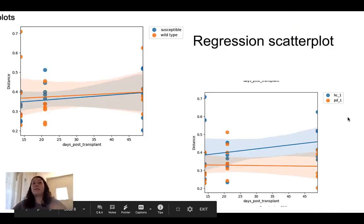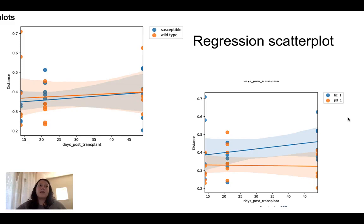Lastly, we looked at volatility plots and temporal analysis that showed that the microbiome in different genetic backgrounds changed differently over time. Here, we can see that the susceptible, the blue, and the wild type, the orange, changed differently over the time of the days post-transplant.